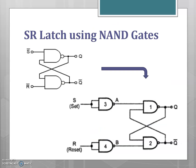The SR latch can also be implemented using NAND gates with inputs S-bar and R-bar. With S as the input, a NAND gate produces S-bar, and similarly with R as the input a NAND gate produces R-bar. The operation is similar to that of the NOR gate implementation.